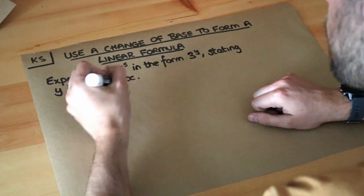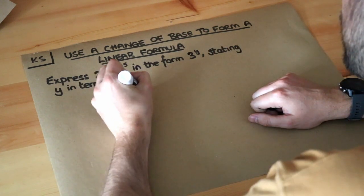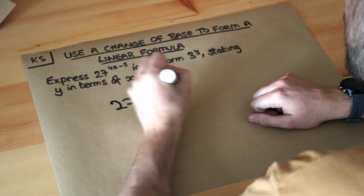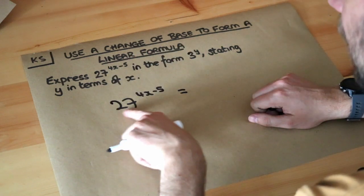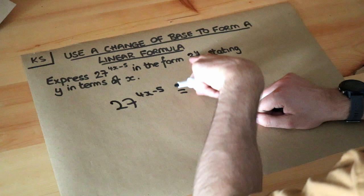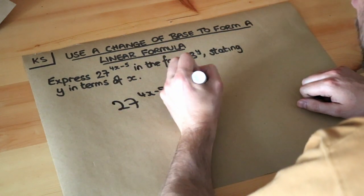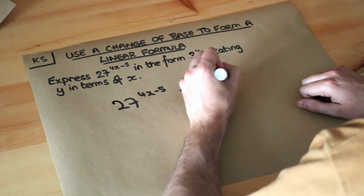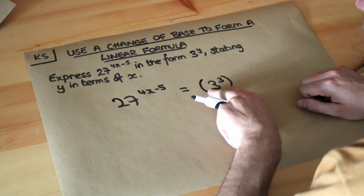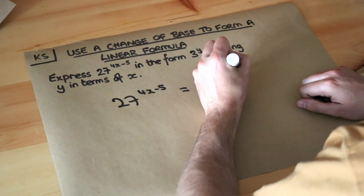And that is the strategy of this kind of question. We take the 27 to the 4x minus 5 and we want to write that 27 as a power of 3 because then we can put it in this form. So I'm going to put it in brackets. 27 can be written as 3 to the power of 3 and it's that to the power of 4x minus 5.